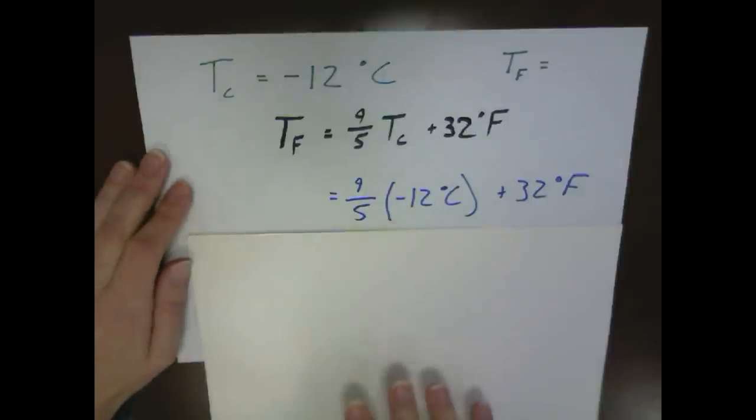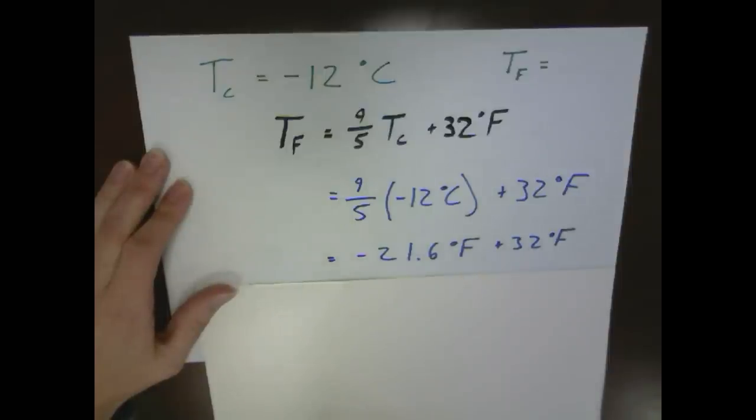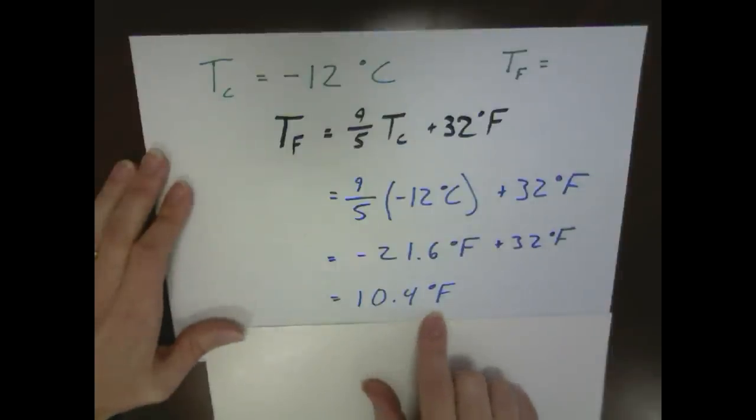So 9/5 of negative 12 gives us minus 21.6 plus our 32 degree offset. And that gives us a final temperature of 10.4 degrees Fahrenheit.